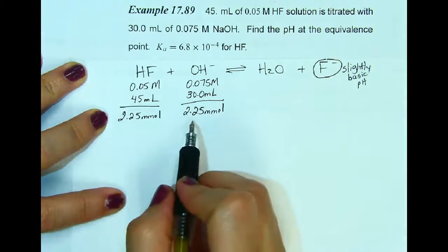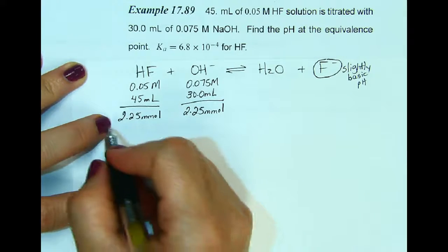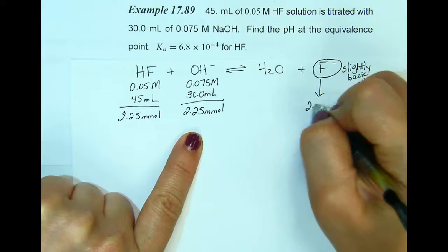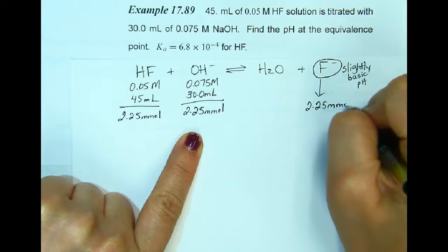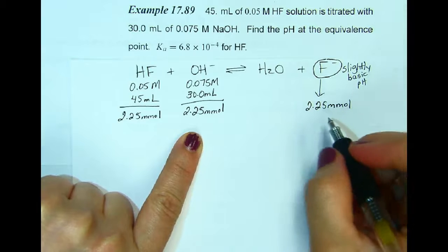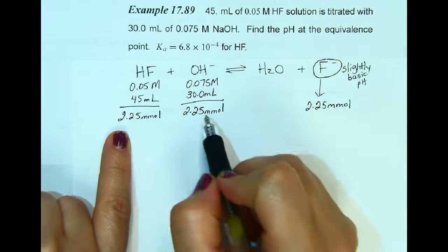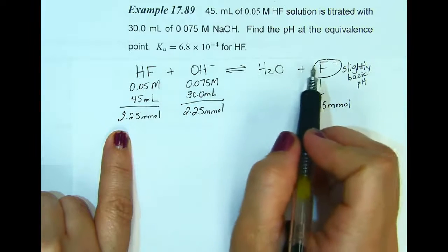So notice that they react completely. We have equal amounts, which means that we're going to produce 2.25 millimoles of the fluoride ion in this reaction as well. Because it's the hydrogen and the hydroxide that neutralize one another and the fluoride ion is what's left over.